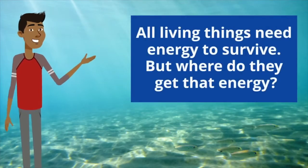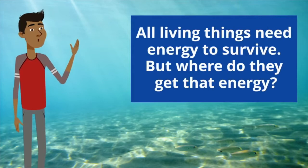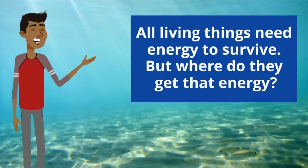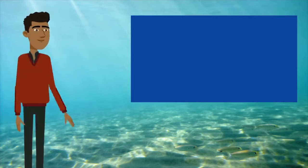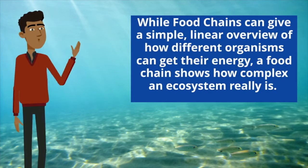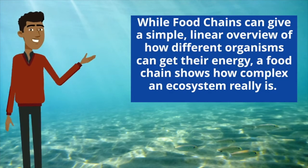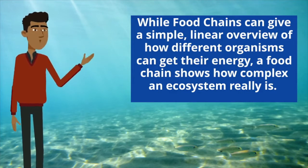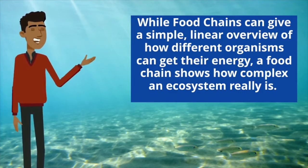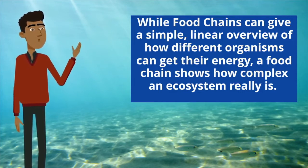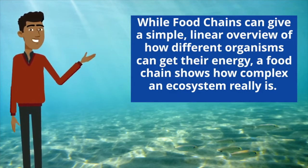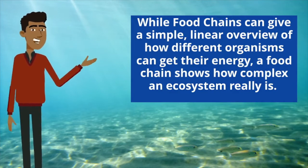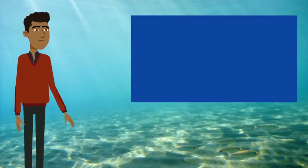All living things need energy to survive, but where do they get that energy? While food chains can give a simple, linear overview of how different organisms get their energy, a food web shows how complex an ecosystem really is.